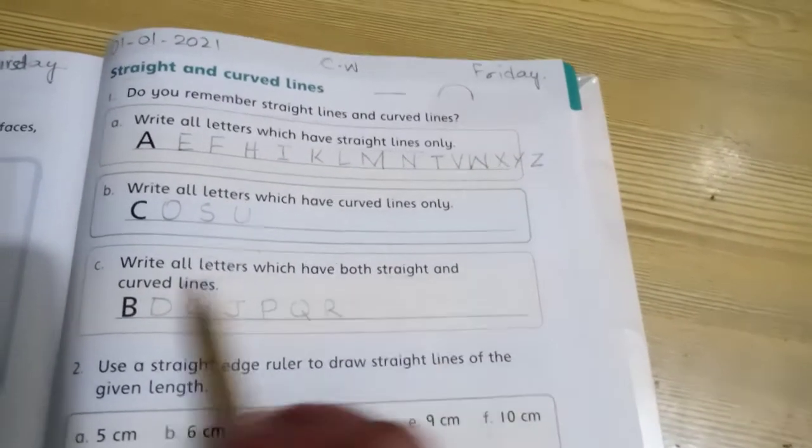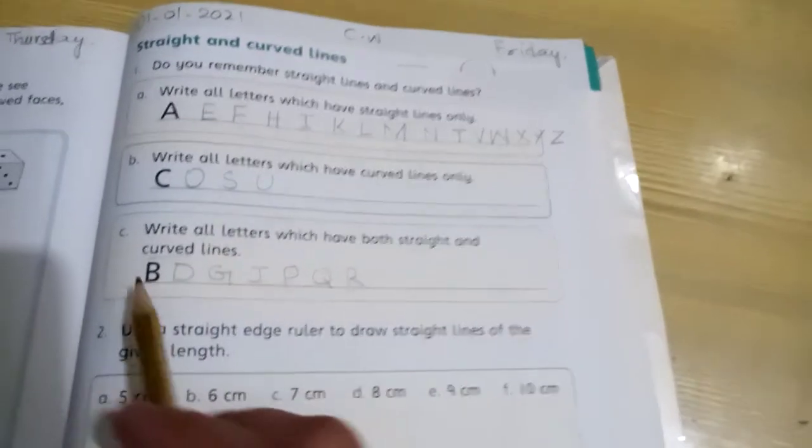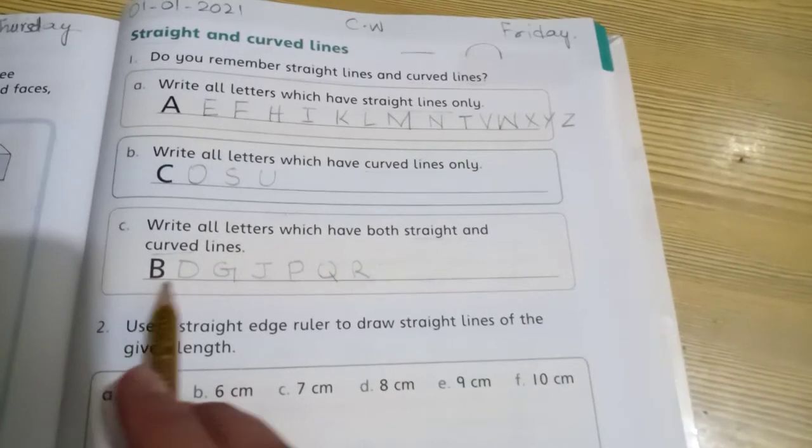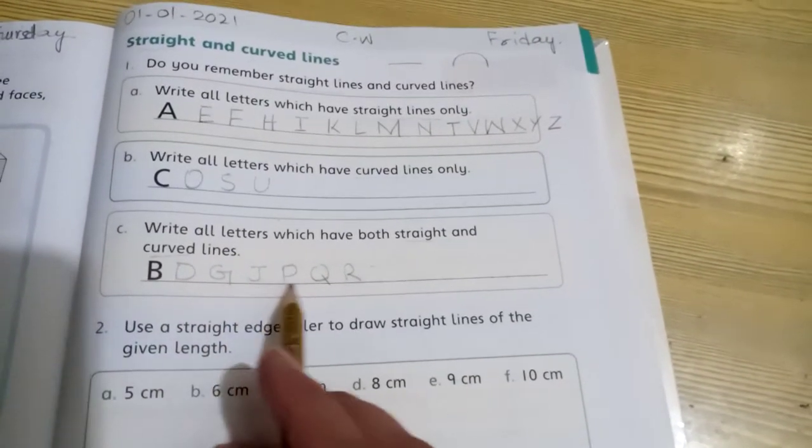Part C: write all letters which have both straight and curved lines. These are: first is B, then D G J P Q R.